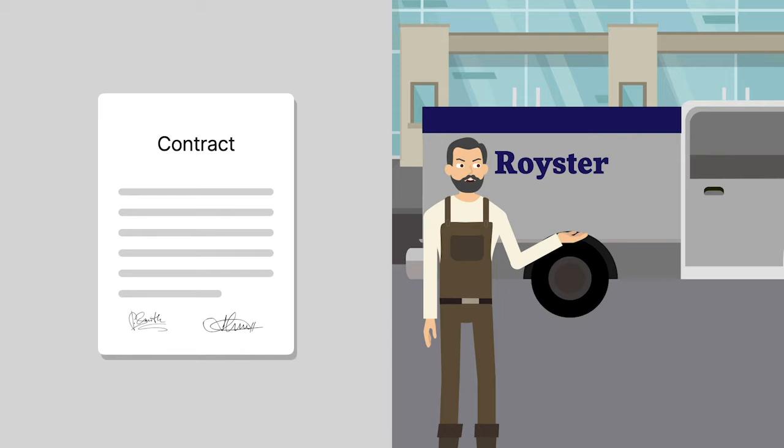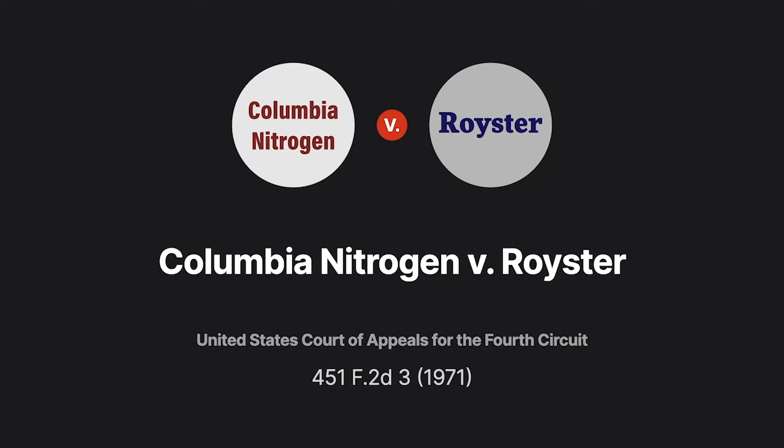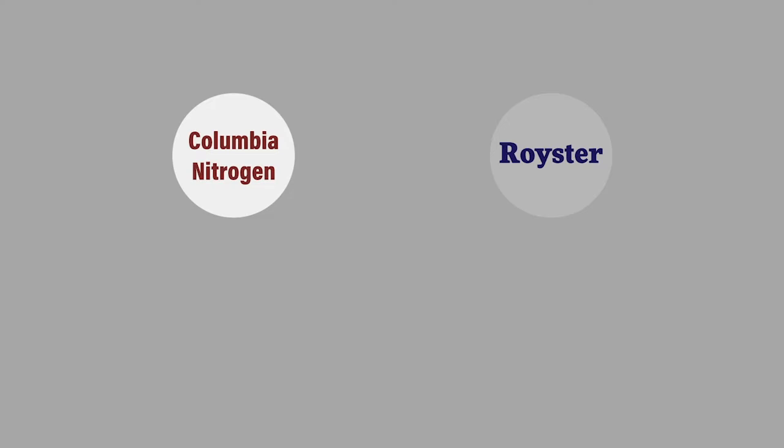Royster Company and Columbia Nitrogen had a contract for the purchase and sale of phosphate, a fertilizer ingredient. When Columbia refused to take the amount of phosphate it had agreed to, Royster sued for breach of contract. In Columbia Nitrogen v. Royster, Columbia argued that the party's contract didn't actually mean what it said. But did the court buy what Columbia was selling?